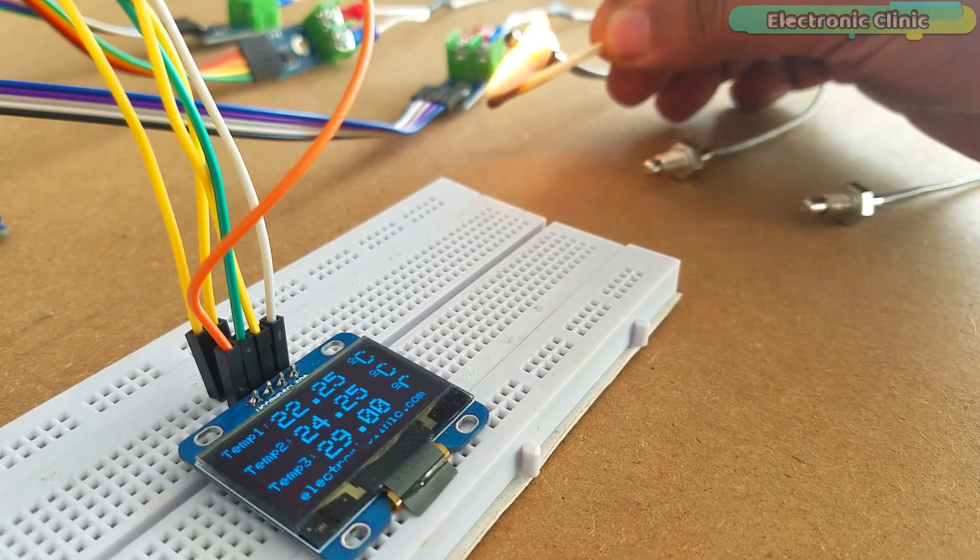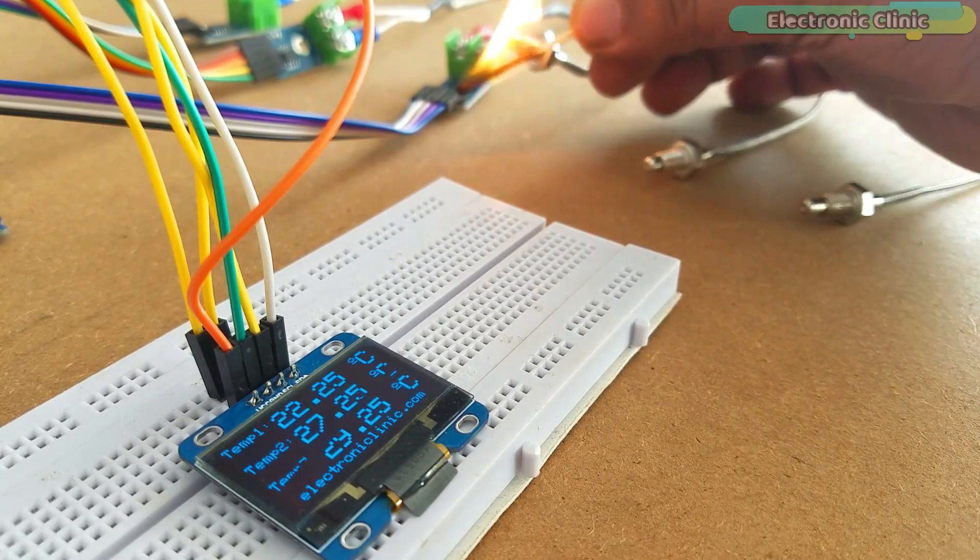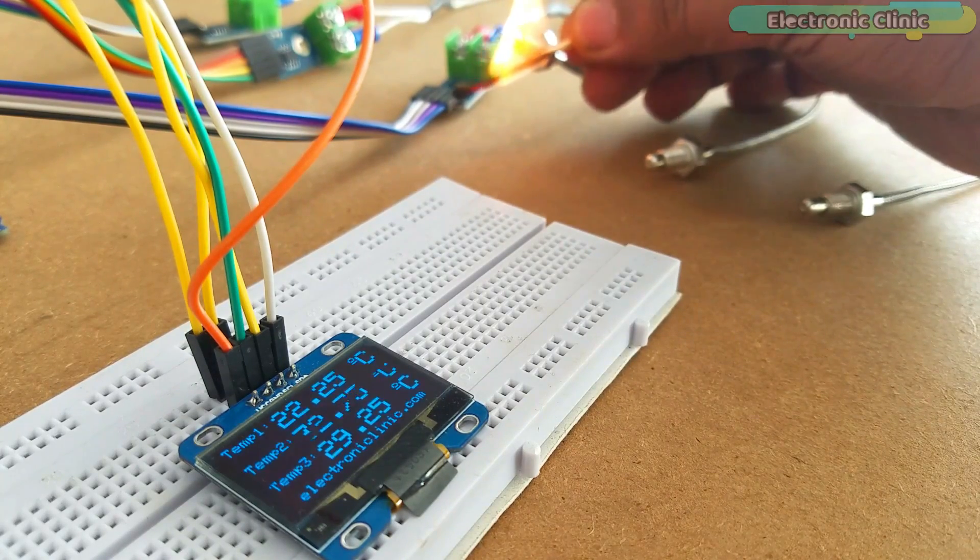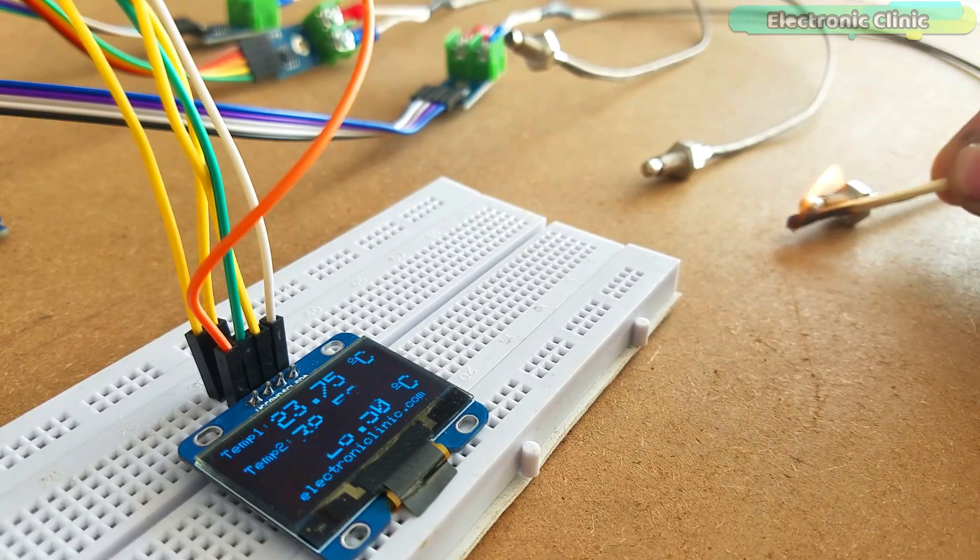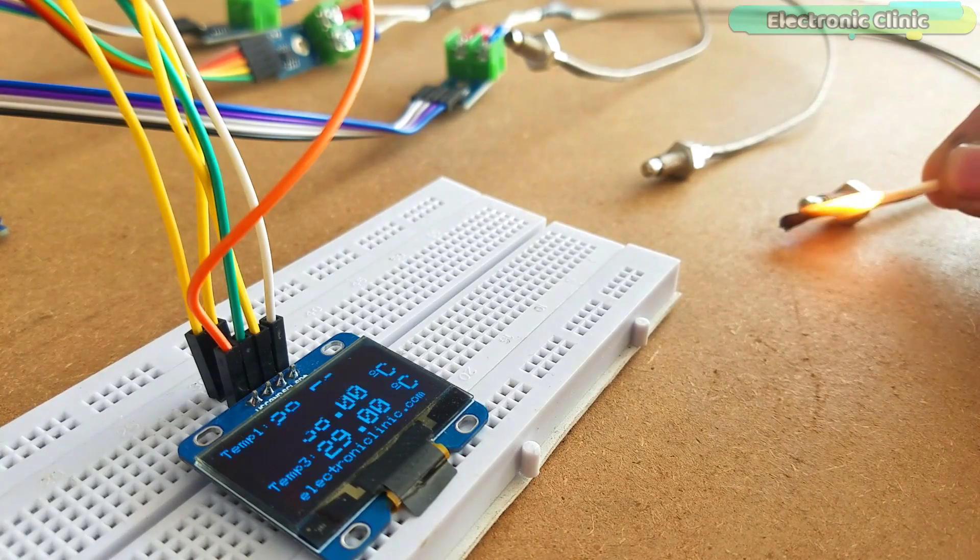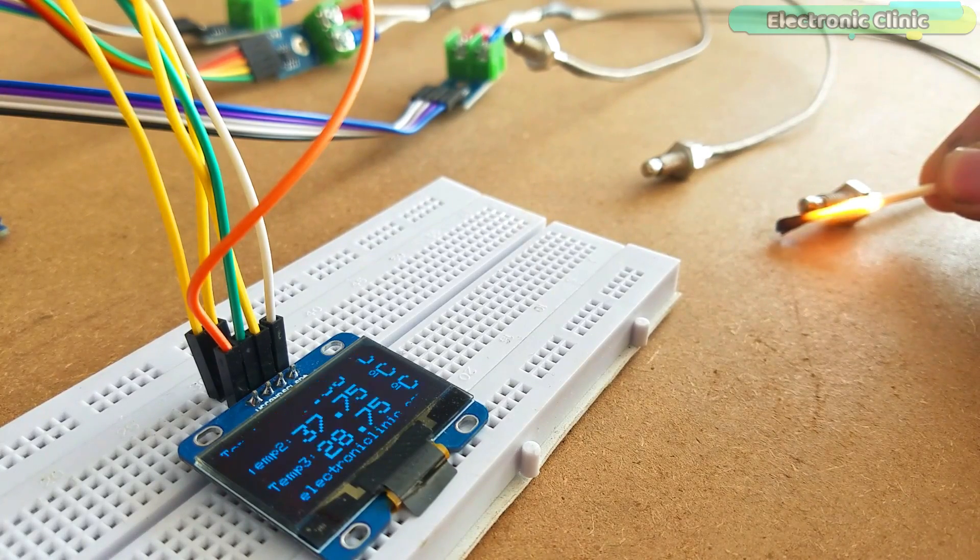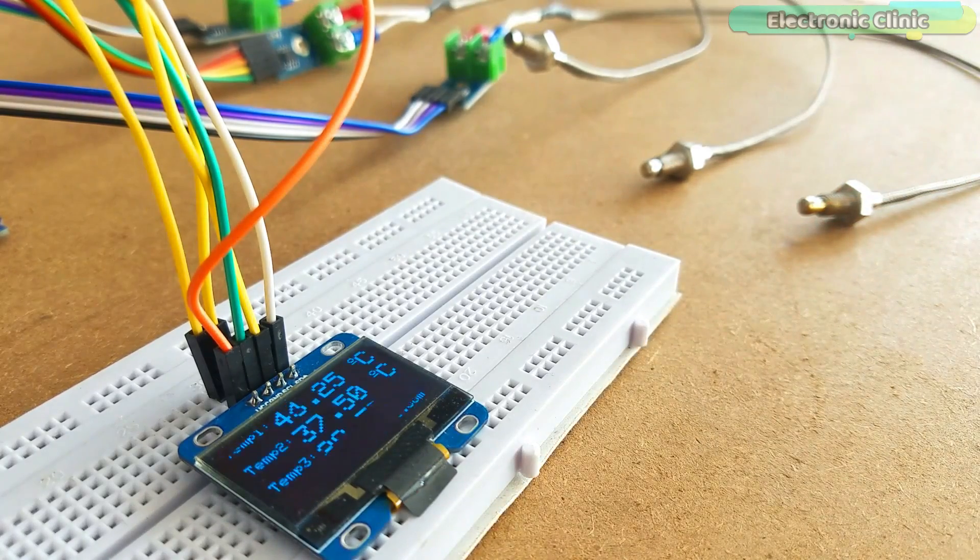In this tutorial, we will cover number 1, MAX6675 technical specifications. Number 2, OLED display module pinout. Number 3, complete circuit diagram explanation. Number 4, Arduino programming and finally number 5, testing. Without any further delay, let's get started.